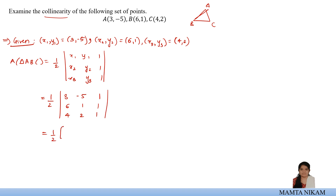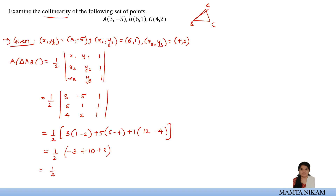Evaluating: half times [3 × (1 − 2) − (−5) × (6 − 4) + 1 × (12 − 4)] = half times [3 × (−1) + 5 × 2 + 8] = half times [−3 + 10 + 8] = half times 15 = 15/2. Since the value is 15/2, which is not equal to 0, the given set of points is non-collinear.